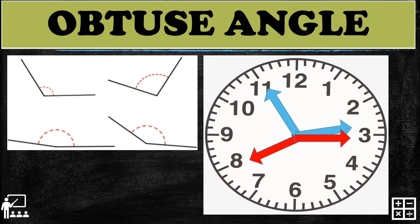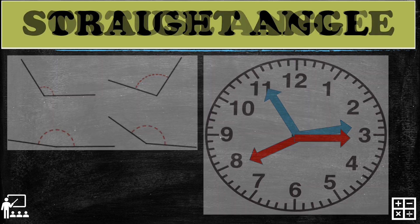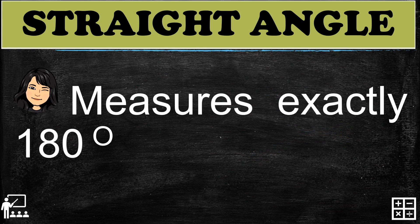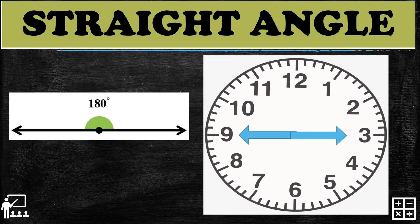Last is the straight angle. Straight angle measures exactly 180 degrees. As you can see on my left, it is a straight line. My examples for this are 9:15 or 3:45, or it can be 6 o'clock or 12:30. It is also possible at 1:35 or 7:05. You can play with the clock to form different angles.